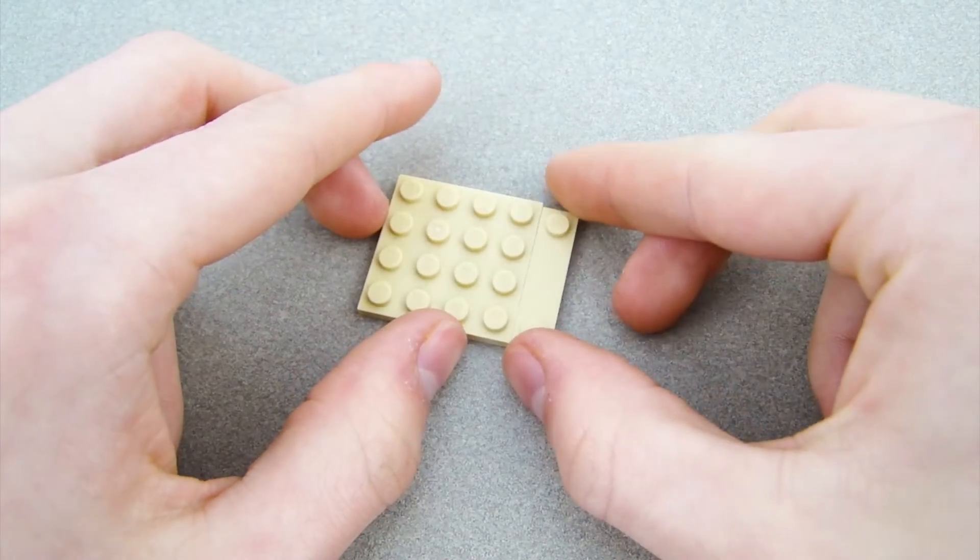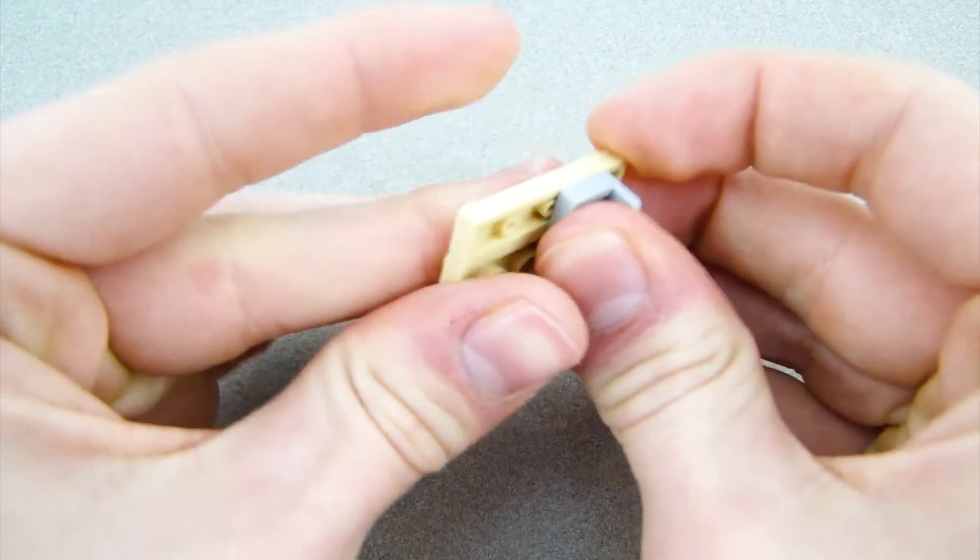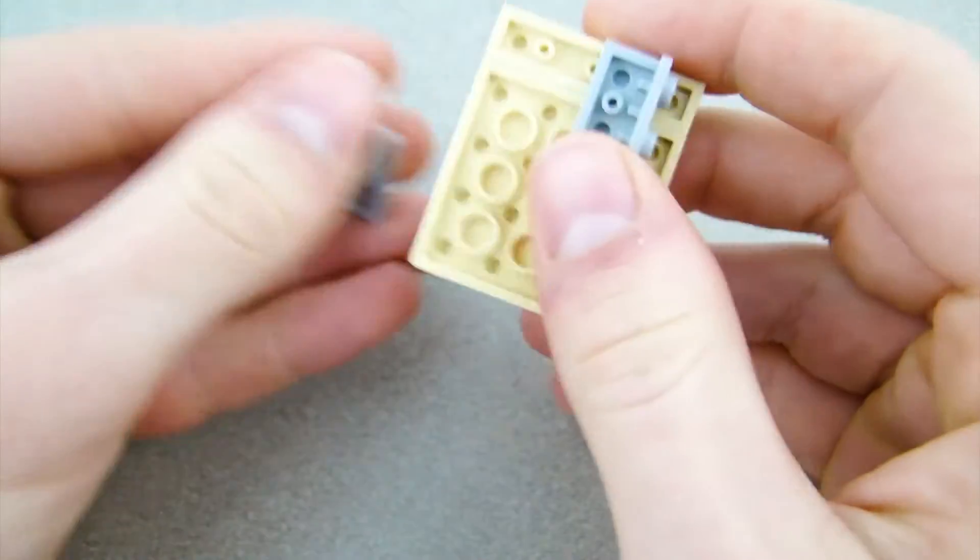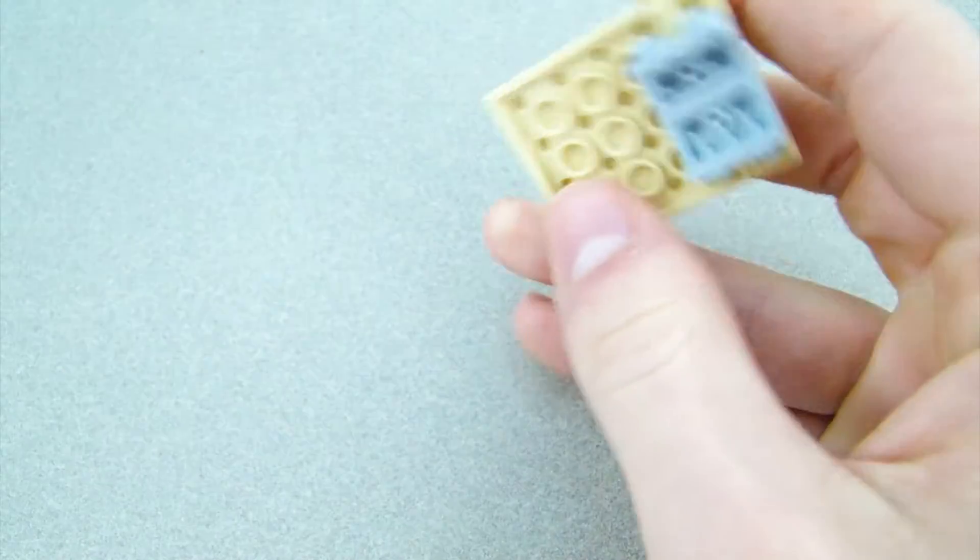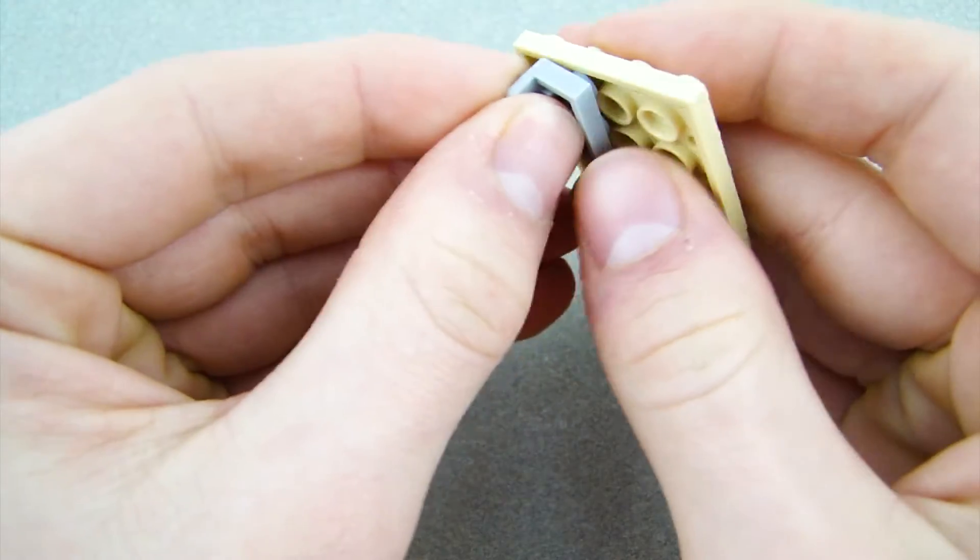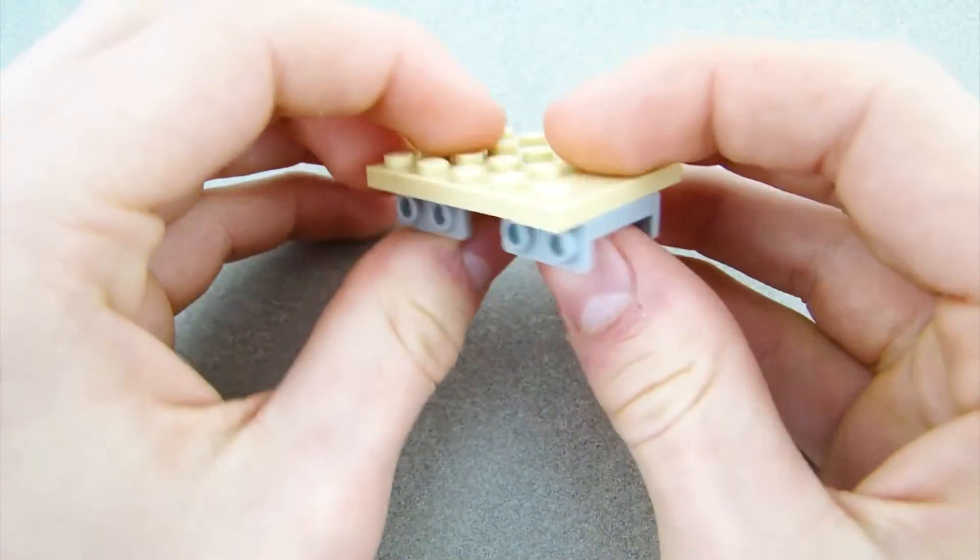So first, get this 4x4 plate and put this piece right next to it. And then on the bottom of those, put this piece right there like that, holding those together. And another one on the other side like that. And then you basically want to mirror the same thing on the other side. So it should look like that. Everything should be held together now.